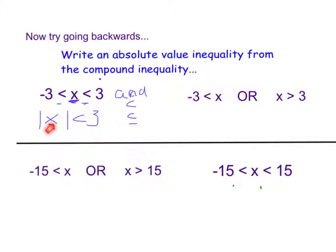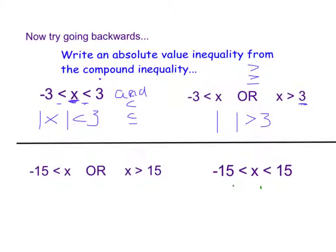Let's do an or. For the or, we know that if it's an or it has to be a greater than or greater than or equal to. These are both not or equal to's, so we know we're going to be using just the greater than symbol. So we take the greater than symbol and the positive. When we were writing the compound inequality, we took whatever was in the absolute value symbol and put it greater than the positive. So going in reverse, whatever is greater than the positive gets put in the absolute value symbol.